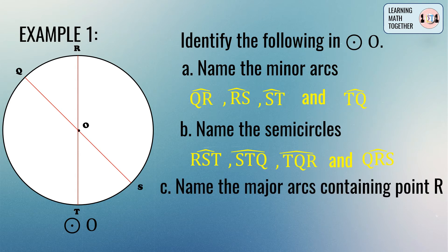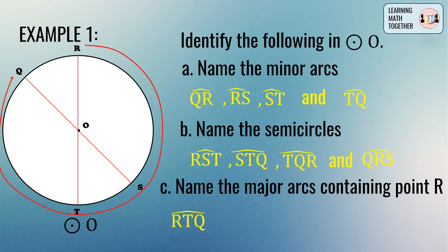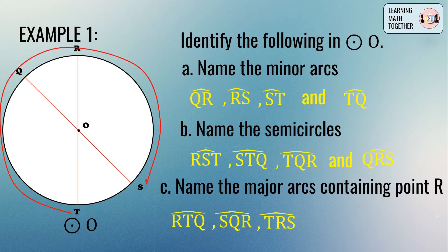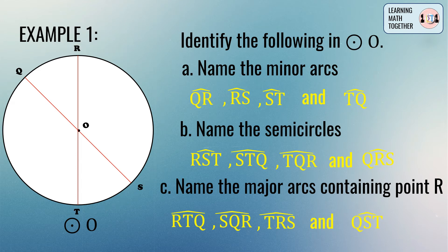When you name a semicircle, you use three capital letters. Now let's move on to the major arcs that contain point R. Just like semicircles, major arcs are named using three capital letters, and their measurement is greater than 180 degrees but less than 360 degrees. The major arcs containing point R are: arc RTQ, arc SQR, arc TRS, and arc QST.